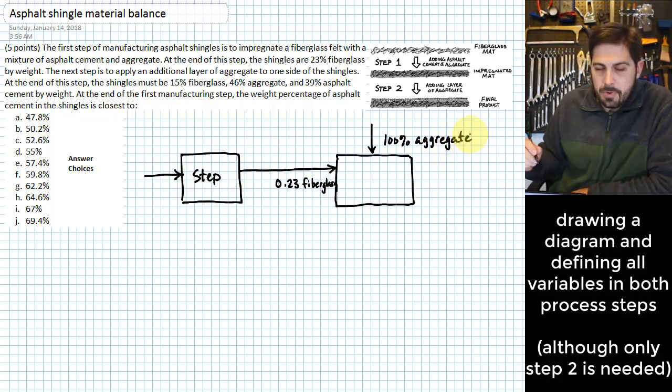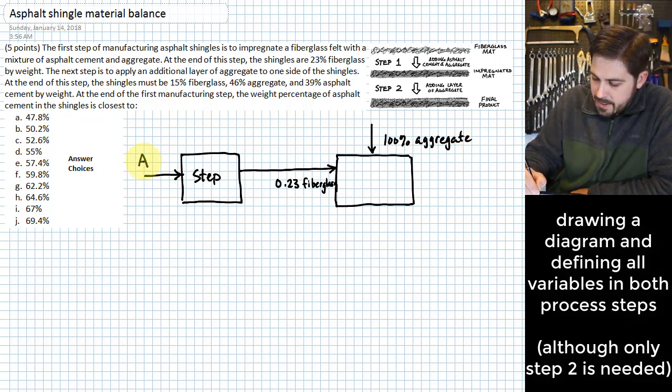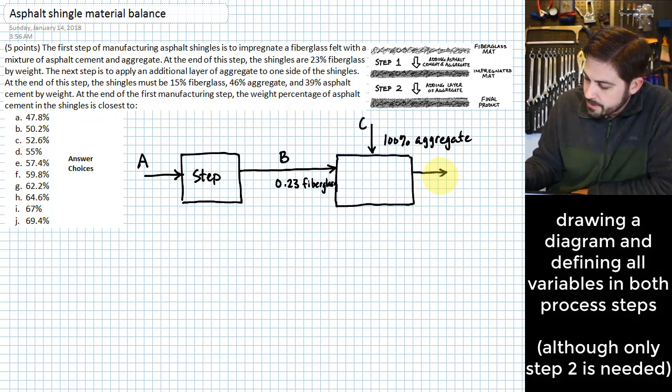And it's probably worthwhile us putting some variables on here. Let's say we have a certain amount coming into the first step. We have another amount that we don't know yet going into the second step. So we can label that B. Let's label this one here, C. And then lastly, we have a certain amount of this product that comes out the other end. We'll call that D.